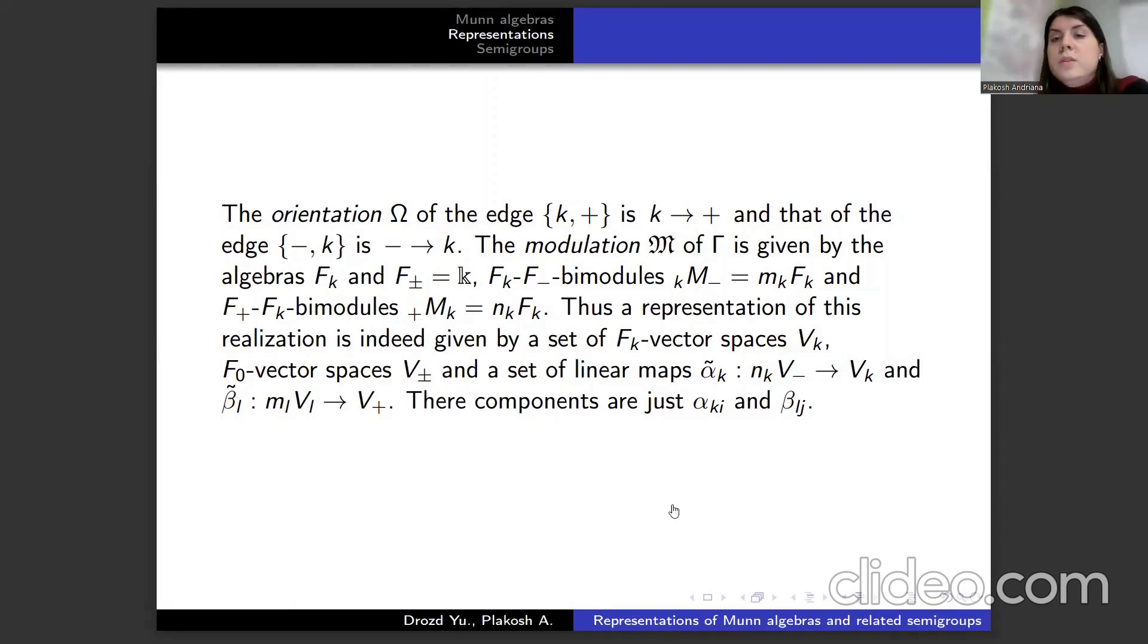The modulation m of ω is given by the algebras Fₖ, where F₊ equals Fₖ for Fₖ-bimodules. Thus, the representation of this realization is indeed given by a set of k-vector spaces Vₖ, F₀-vector spaces V₊, V₋, and a set of linear maps α̃ₖᵢ and β̃ₗⱼ. Their components are just αₖᵢ and βₗⱼ.